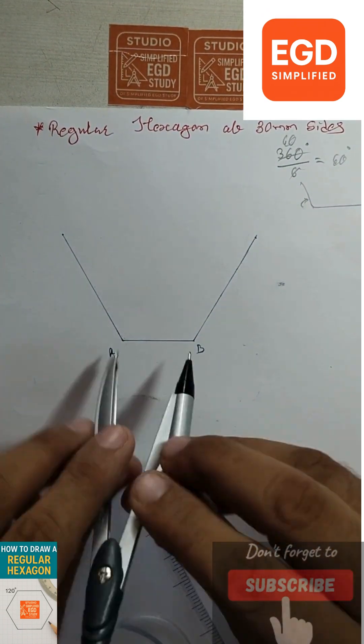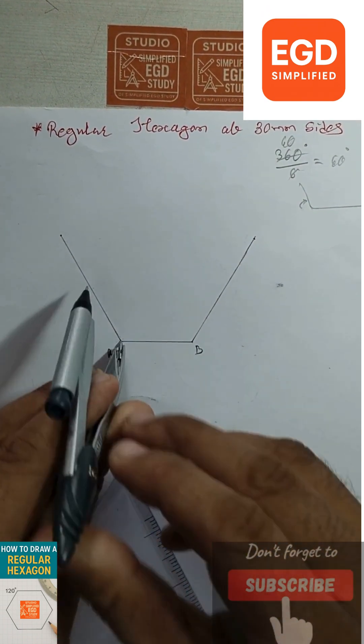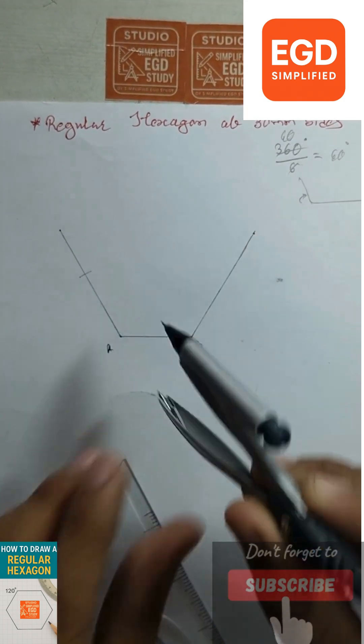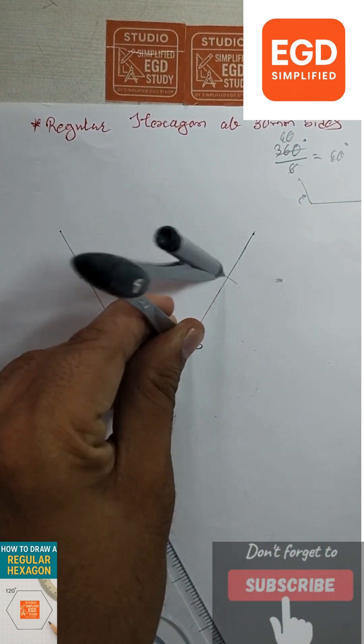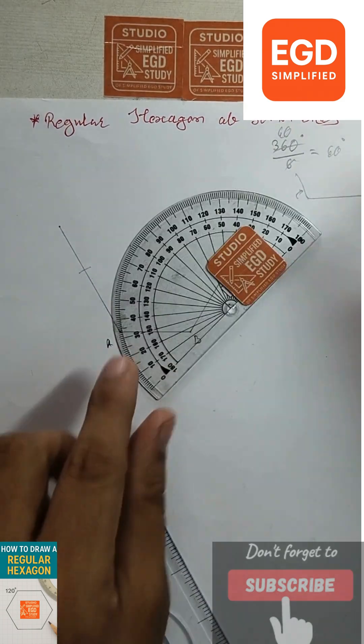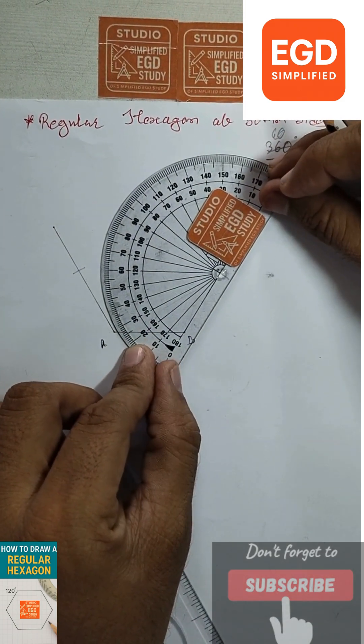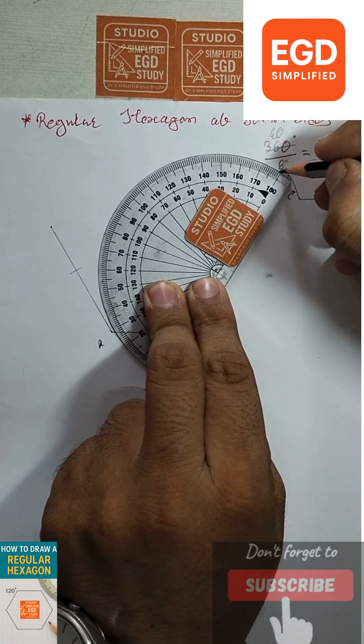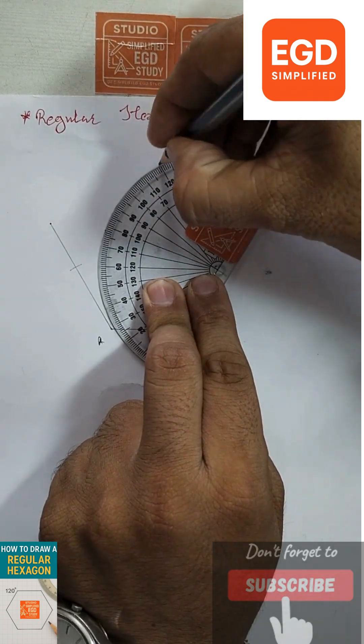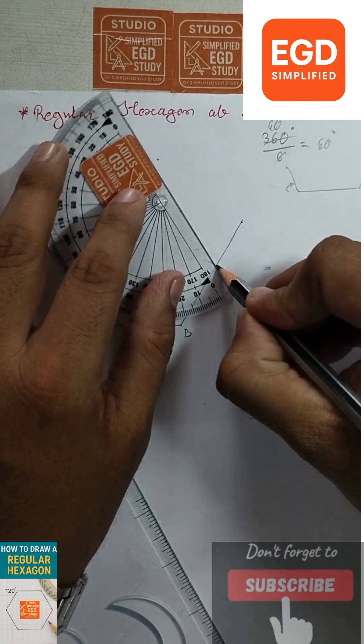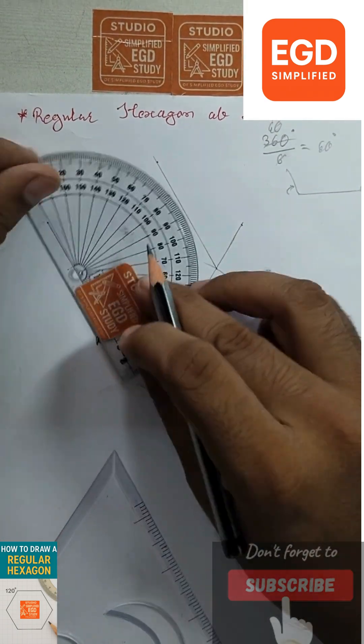Now take a measurement of AB and draw arcs from point A as well as from point B. Again measure the angle of 60 degrees from the next point from the outside. Connect the points.